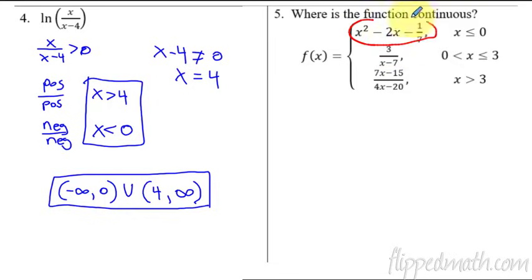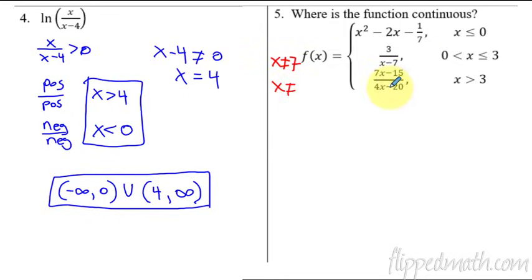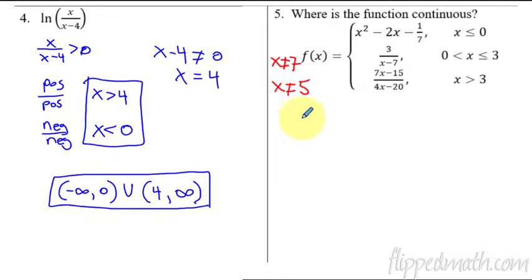Let's go piece by piece through the piecewise function. The first piece — does it have any discontinuities? No. The second piece? Yes — x cannot equal seven. And for the last piece, solving gives x cannot equal five. So those are the only discontinuities within each individual piece. Now let's check the piecewise connections. Plugging zero into the first piece gives negative one-seventh; plugging zero into the second piece gives negative three-sevenths. Those are different, so there is a discontinuity at x equals zero.